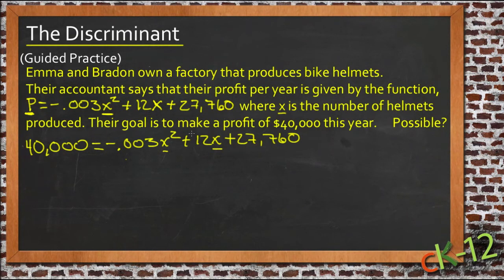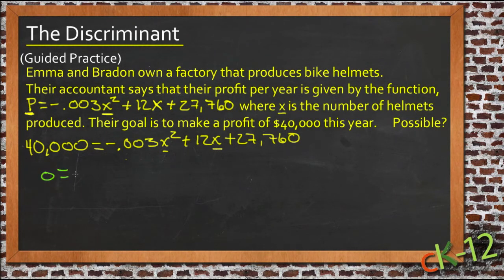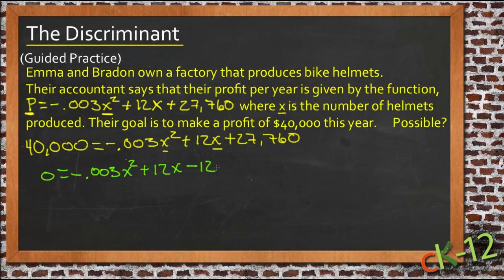The easiest way to solve for x when you have a quadratic expression is to use the quadratic formula. We want to move the 40,000 over to the other side so it's set equal to 0. Subtracting 40,000 from both sides, we get 0 equals negative 0.003x squared plus 12x minus 12,240. Now we can identify a, b, and c and plug them into the quadratic formula.